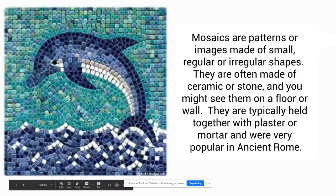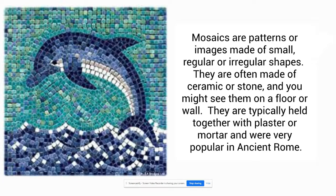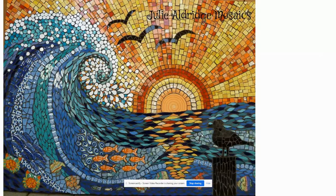Here's another example. Typically they're made out of ceramic or stone. You might see them on a floor or on a wall, and they're held together with plaster or mortar typically. It's a style that was very popular in ancient Rome. Here's another example where you can see this one has little circles and little rectangles, so you can make it however you like.